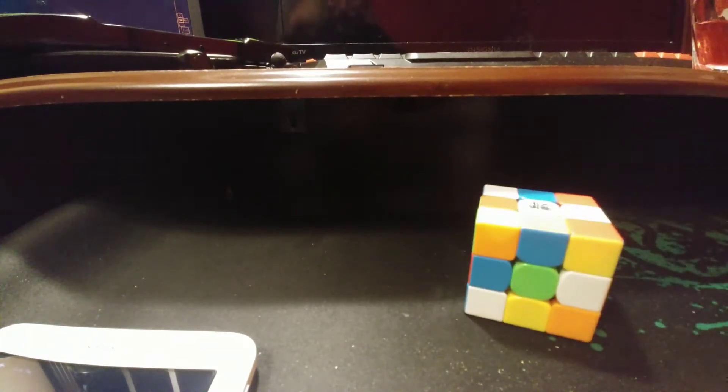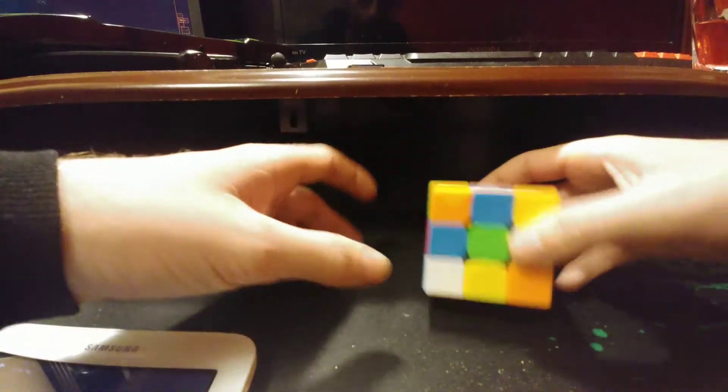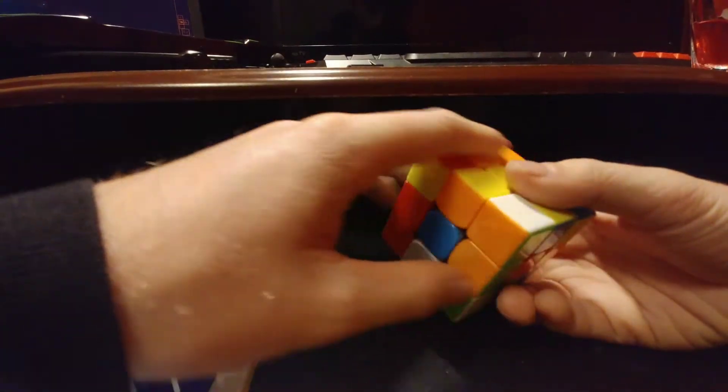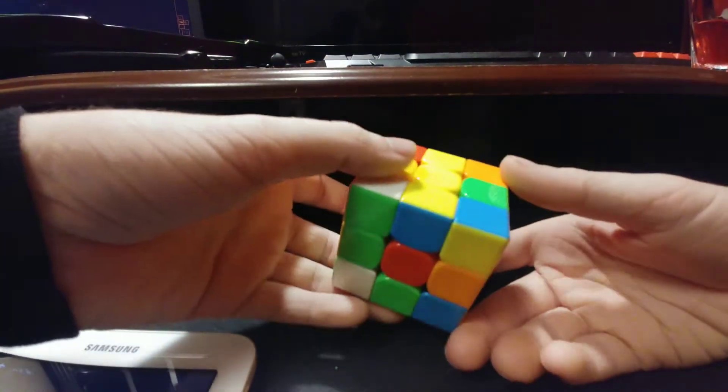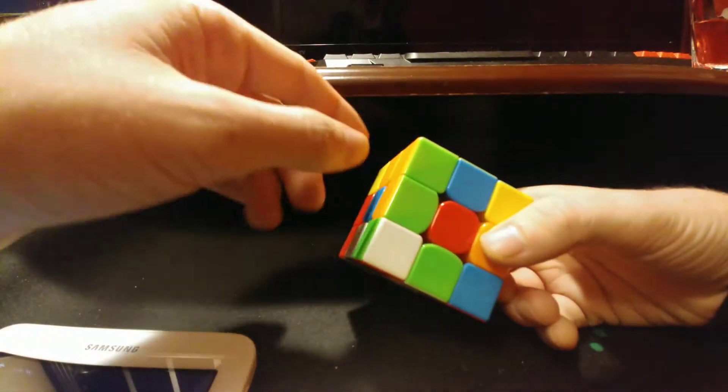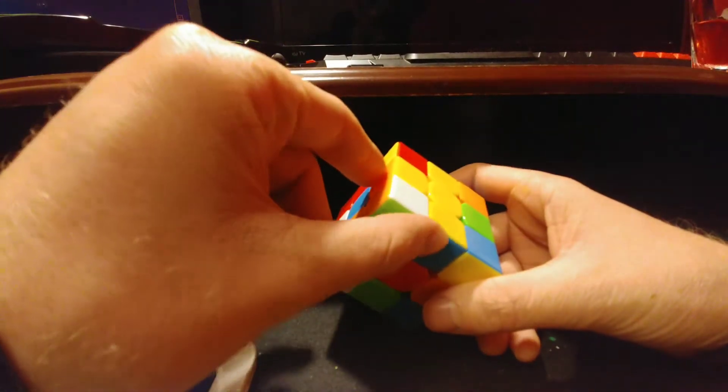So this first one is a 15.69 that I got. Let's just jump into it. I decided I was going to start with yellow because it's looking pretty fine. The orange and blue cross pieces are solved relative to each other so we just need to fix green and red.